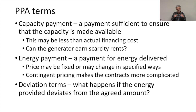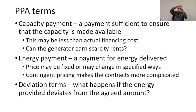...then PPA terms are going to have to have a capacity payment in addition to the energy payments, or the generator wouldn't be willing to build the asset because they're not making enough of those scarcity rents. And so you'll have an energy payment, often supplemented by a capacity payment, and then deviation terms.